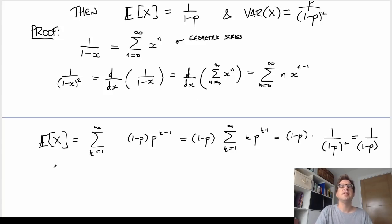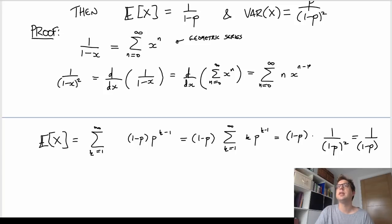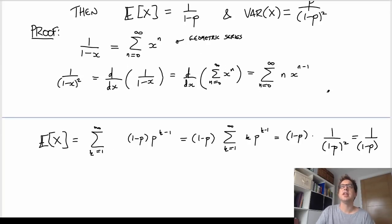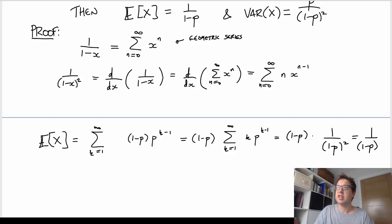You can do the same thing for the variance — notice I can differentiate this twice and get something like N times (N minus 1), which is going to help me get the E[X squared] term. So essentially the argument to do the variance involves doing another differentiation and then playing around a bit. I'll let you do that calculation yourself; it's not any more difficult, just a little bit more fiddly.